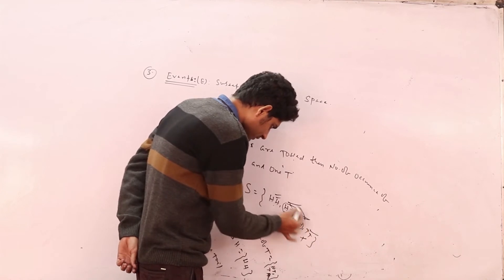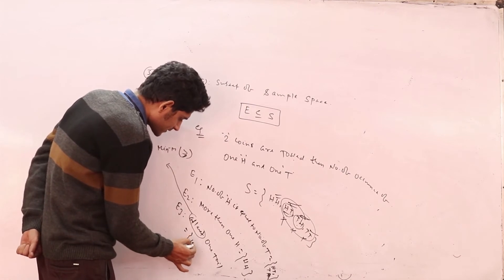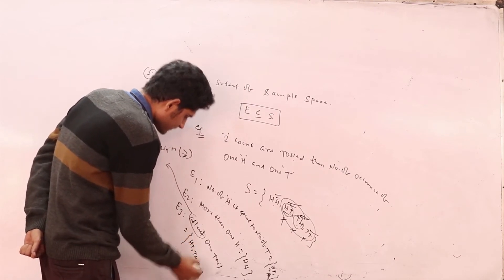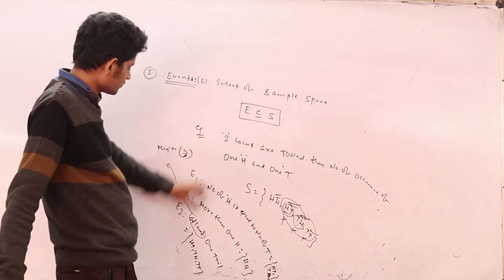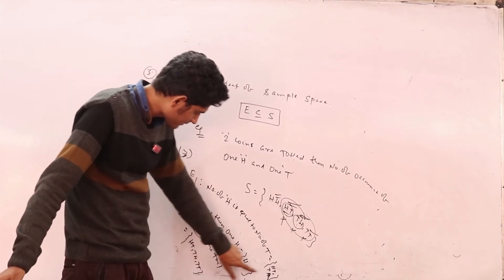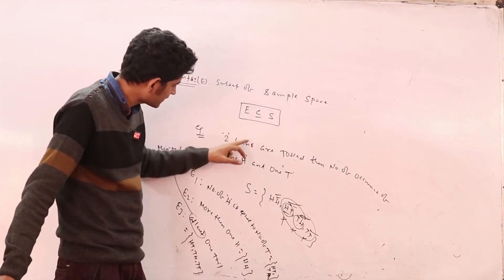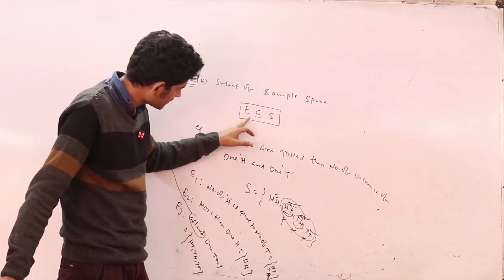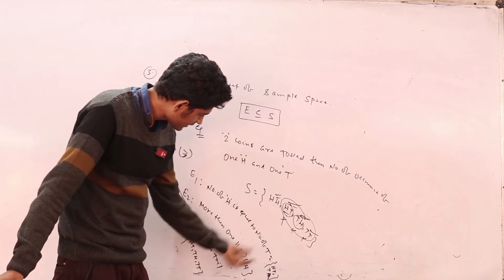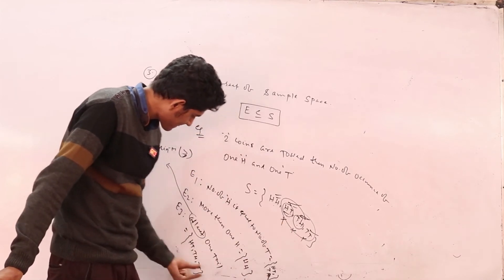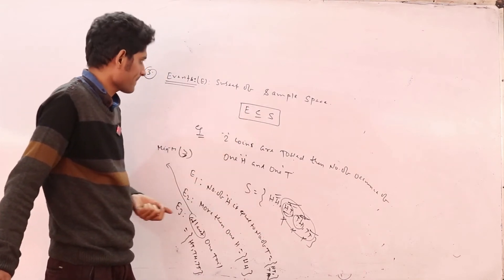At least one tail — the cases are HT, TH, and TT, so all three of those cases make up the event. You have to write these events, and this shows that event E is a subset of sample space S, because each event is a subset of the sample space.